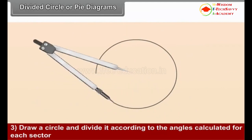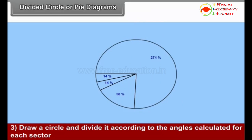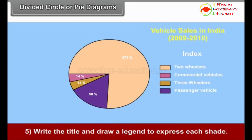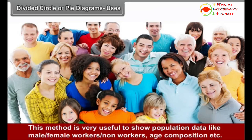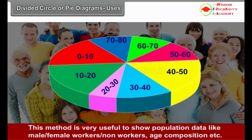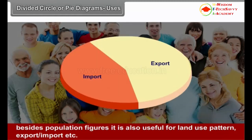Draw a circle and divide it according to the angles calculated for each sector. Shade the sectors. Write the title and draw a legend to express each shade. Uses: This method is very useful for showing population data like male-female ratio, workers and non-workers, age compositions, etc. Besides population figures, it is also useful for land use pattern, export-import, etc.